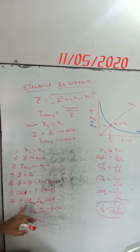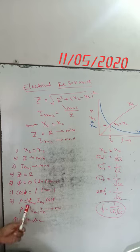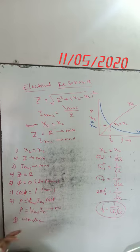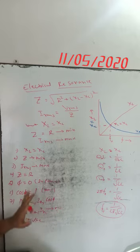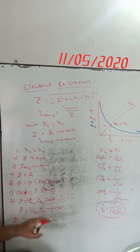Regarding power loss in the resonance circuit: the equation for power loss in the AC circuit is P equals V_RMS times I_RMS times cos φ. Since cos φ equals 1, P equals V_RMS times I_RMS. So power is maximum, meaning power loss in the resonance circuit is also maximum.